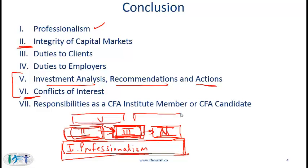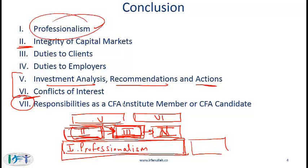Standards 5 and 6 address investment analysis and conflicts of interest, sitting on top of Standards 2, 3 and 4. The final Standard 7 is essentially an extension of Standard 1 in the sense that since you are practicing in investment management you need a certain level of professionalism, and if you have additionally signed up as a candidate in the CFA program, you need to follow the rules of the professional body with which you are now associated — so it is simply an extension of professionalism.